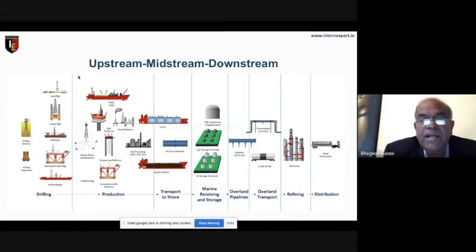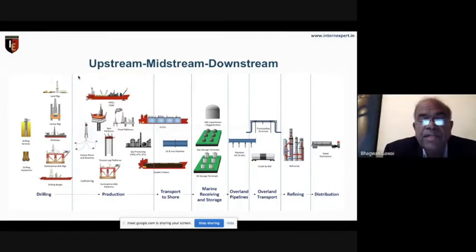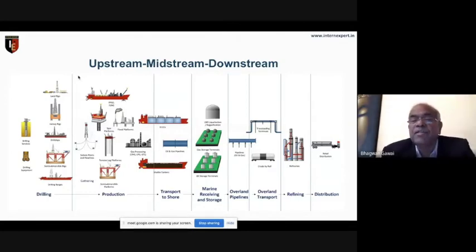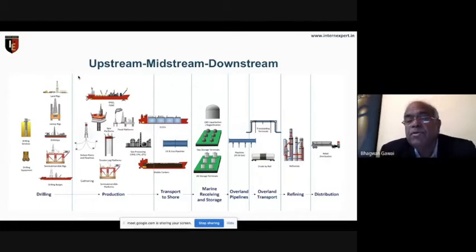In one diagram: you do the drilling operation, then production, then it goes to storage by pipeline, then to refining. From the refinery you get all finished products — from crude oil you get LPG, naphtha, jet fuel, kerosene, diesel, furnace oil, bitumen, and lubricant oils. This is the complete cycle.